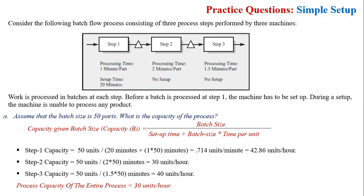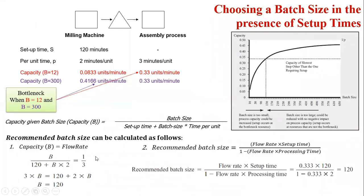We have seen that you can calculate the batch size using a particular formula. Either you can equalize the capacity equal to the flow rate and calculate the flow rate — meaning you first take your bottleneck operation and keep the capacity formula equal to the batch size — or you can use a second formula to calculate the reasonable batch size of each product.